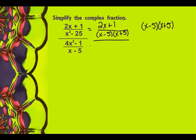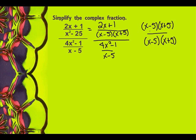Divided by — now I look at the denominator. Well, x minus 5 is going to be my denominator here. So I'm going to leave the top alone over x minus 5. But they have to match, so I'm going to have to multiply by x minus 5 times x plus 5 in the top and the bottom.